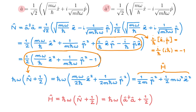We can now briefly anticipate the reason for the name number operator. As we'll learn in the video on the eigenvalues of the quantum harmonic oscillator Hamiltonian, energy is quantized — it can only change in discrete steps called quanta, each of magnitude ℏω. In this context, the operator N counts how many energy quanta there are in the system, hence the name number operator. Similarly, the raising and lowering operators are the operators that add or remove energy quanta from the system, hence their names.